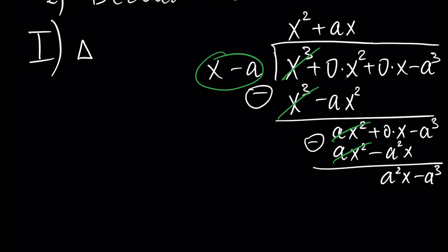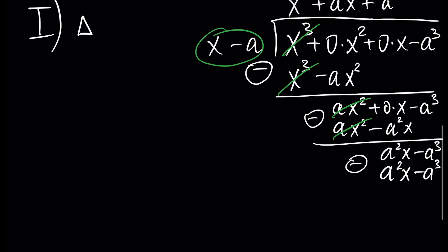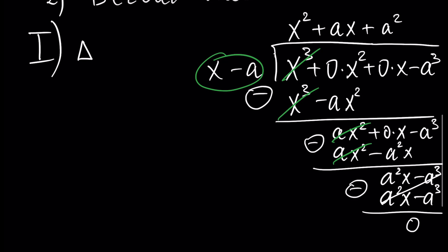Next we write plus a squared in the quotient. We multiply a squared by x minus a to get a squared x minus a cubed. After performing the subtraction we have total cancellation and the result is zero.